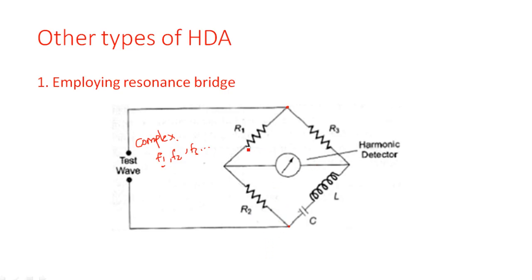R1 is the resistor connected in the first arm, R3 is the resistor connected in the third arm, and R2 is the resistor connected in the second arm. The fourth arm has a tank circuit — a series LC network. The output is indicated on the meter, and the total harmonic distortion is shown by this meter.